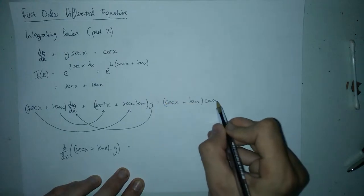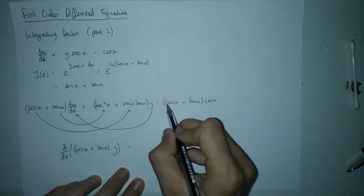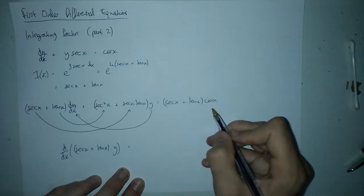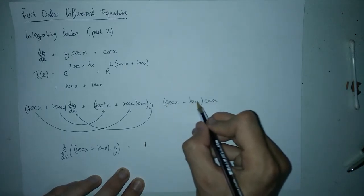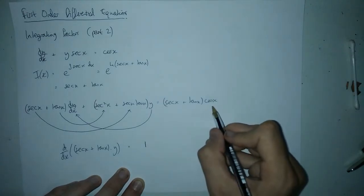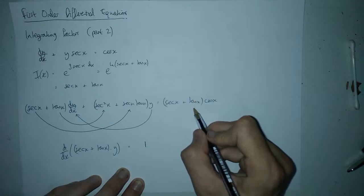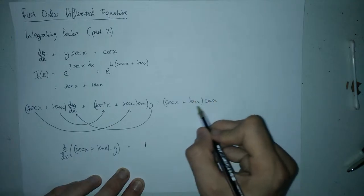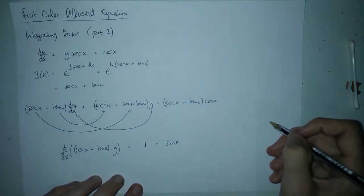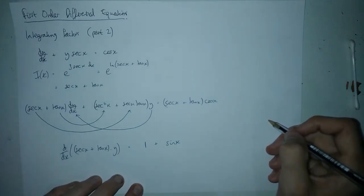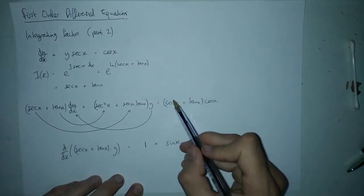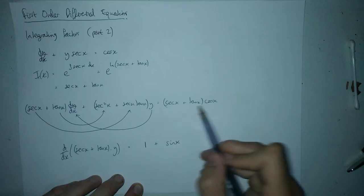Now simplifying the right side: sec x times cos x — sec x is 1 over cos x, and 1 over cos x times cos x cancels to give 1. Then tan x is sin x over cos x, times cos x — the cos x cancels and leaves sin x. So the right-hand side simplifies to 1 + sin x.